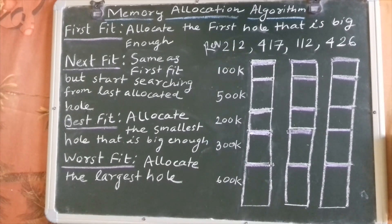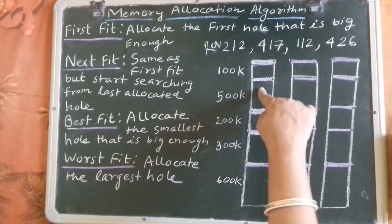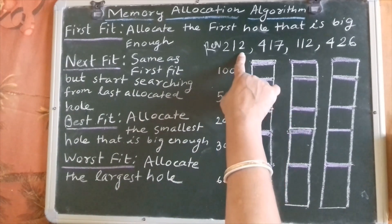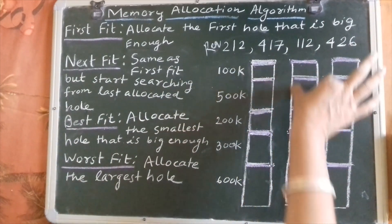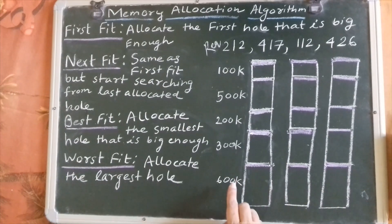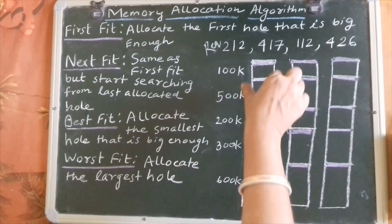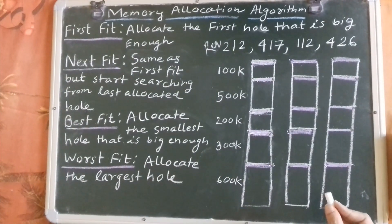Today our topic is some problems on memory allocation algorithms which were already asked in GATE or some competitive exams. We have taken a problem where we have requests of processes wanting to enter memory. The memory map shows some portions already occupied, marked in purple, and this is the free memory available to accommodate those processes.